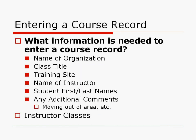When entering a course record, you only need six pieces of information. First is the name of the organization — each teacher can be linked with up to nine different organizations. You'll need the class title and the training site, which is the address of where the training took place, on-site or off-site. The name of the instructor is necessary, and you can have more than one instructor per course. Most classes require student first and last names, but some don't. There's also a spot for any additional comments on the course record.